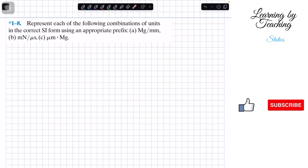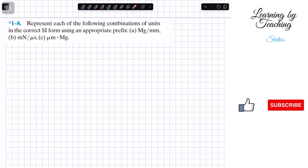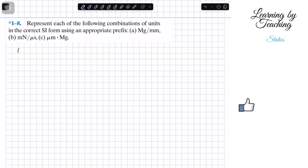Welcome back everyone to Learning Petition. Today we're in statics and we're going to be solving problem 1.8. It says: represent each of the following combinations of units in the correct SI form using an appropriate prefix. We have problems a, b, and c, so let's start by looking at problem a.